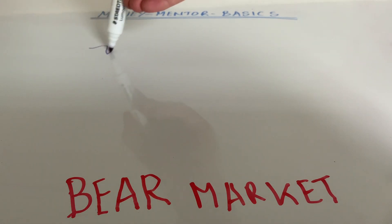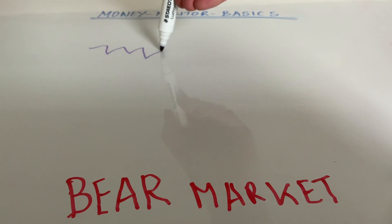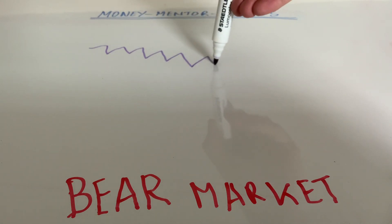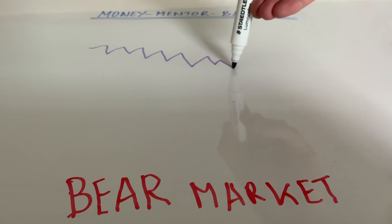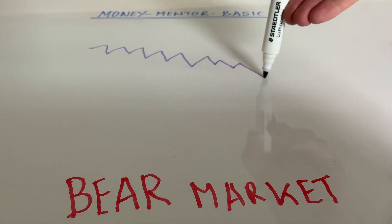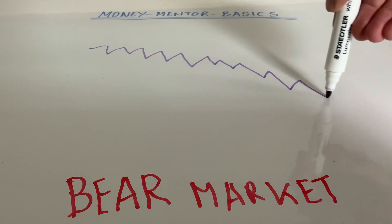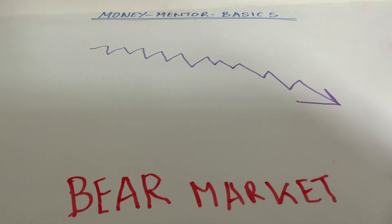A bear market is just where the direction of travel of a stock market or individual share is in a downwards direction. So the overall trend is going downwards. That, simply put, is a bear market.